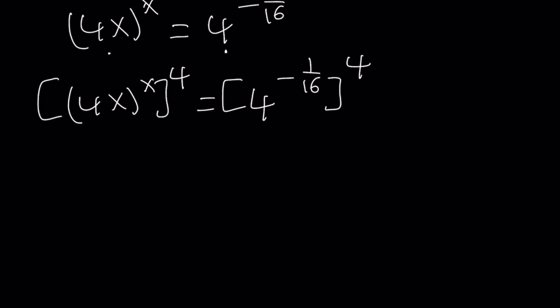So now we have x times 4, which is 4x. Beautiful. That gives us 4x to the power 4x. And here we have to multiply the exponent. So that's going to be 4 to the power negative 4 over 16, which can be written as 4 to the power negative 1 over 4.